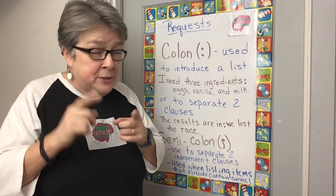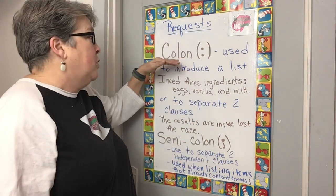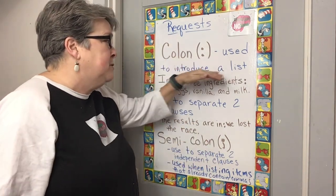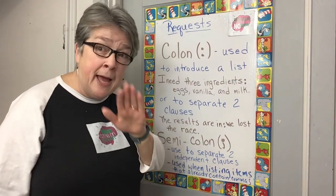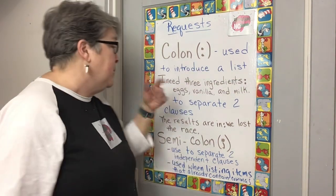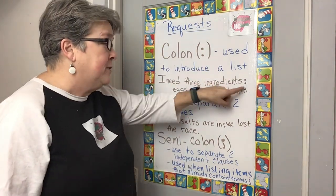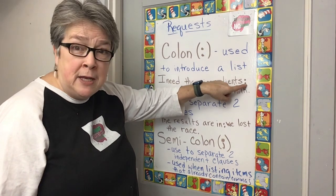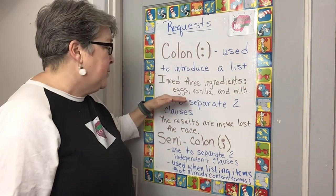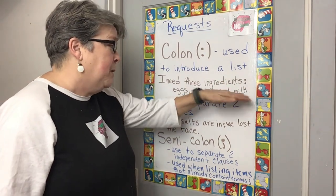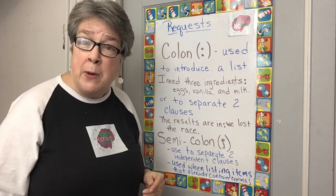Great question. A colon is used to introduce a list. What? Yeah, let me show you. I need three ingredients: eggs, vanilla, and milk.